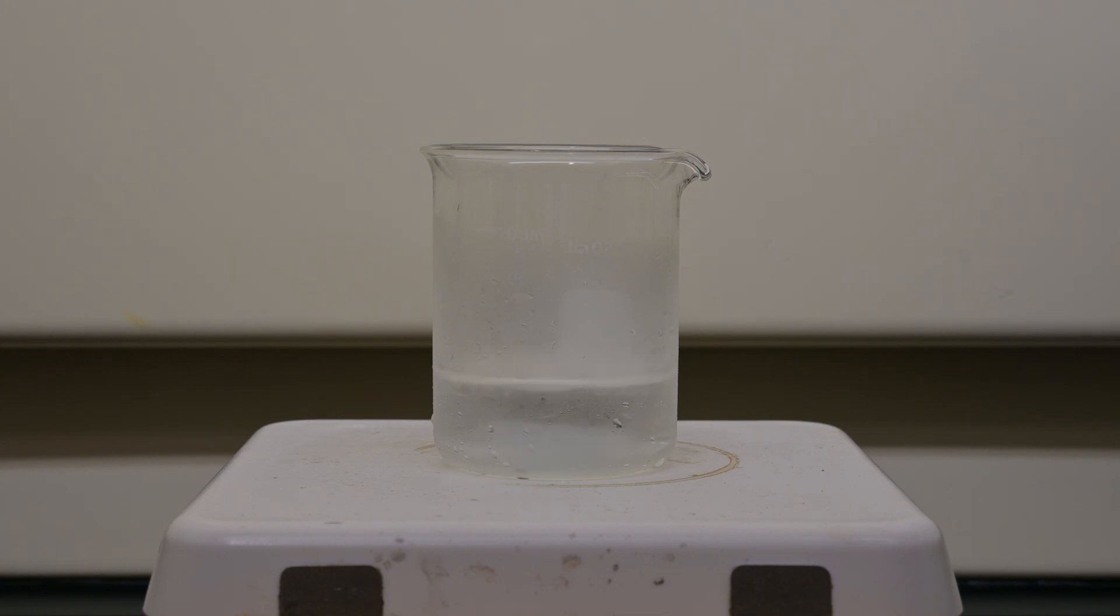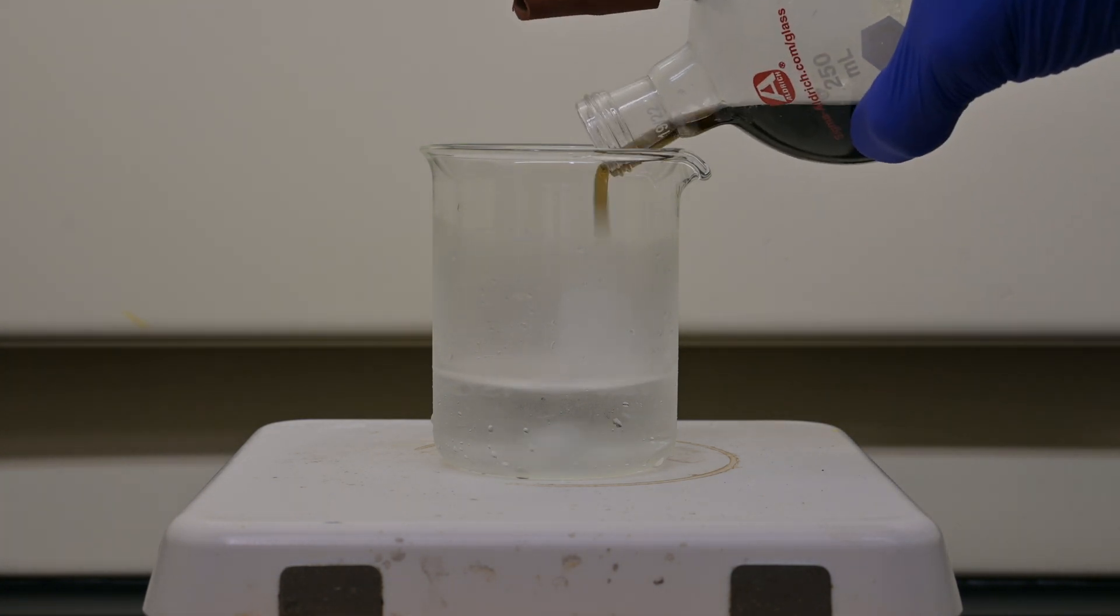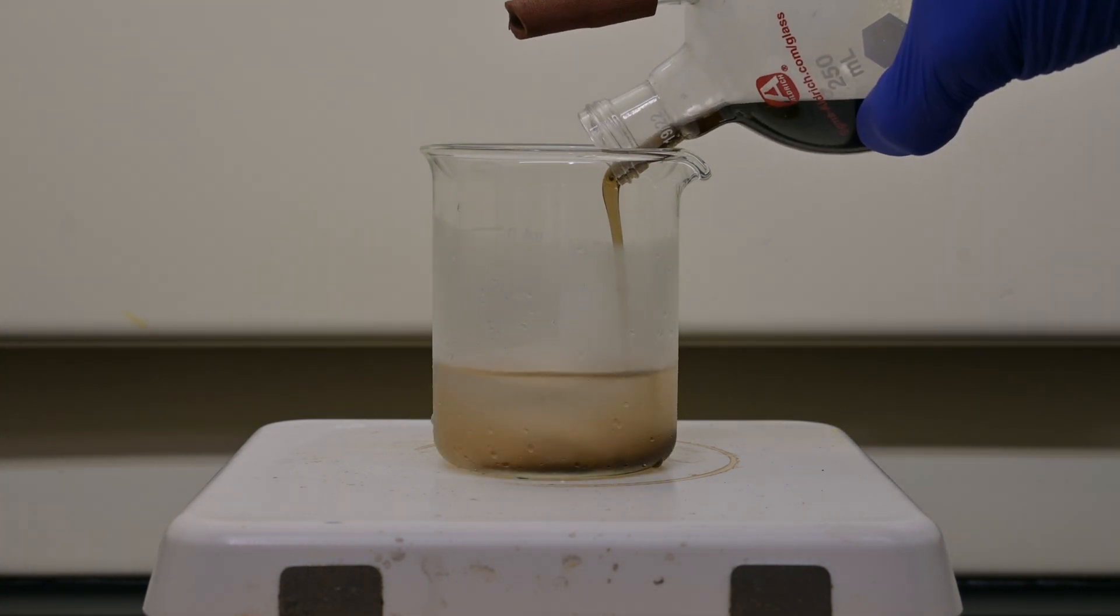Once the reaction is complete, let the mixture cool to room temperature. Once cooled, pour into about 100 milliliters of cold water while stirring. This will precipitate the crude sulfanilic acid as a gray crystalline mass.